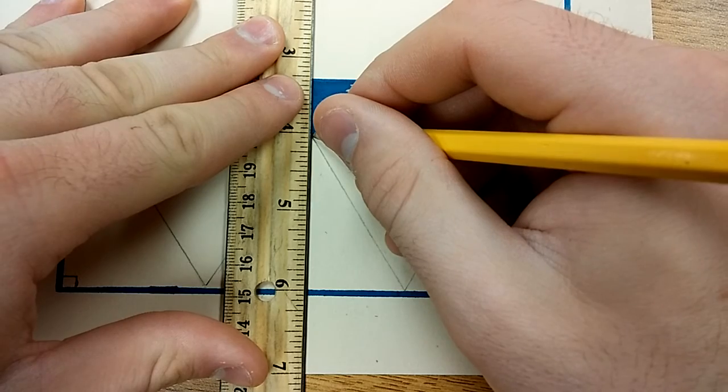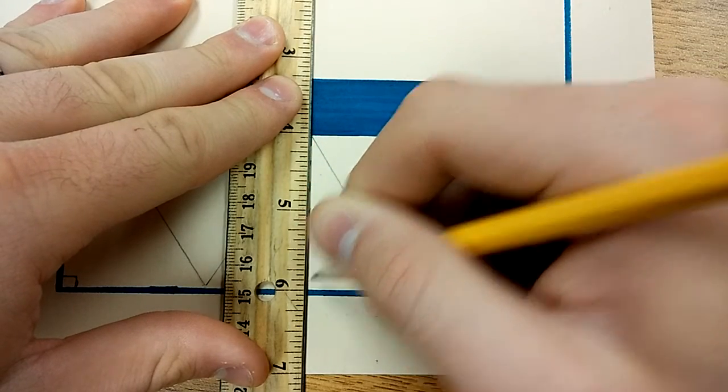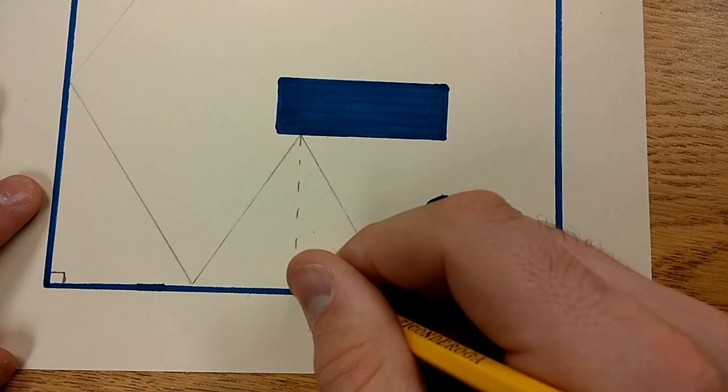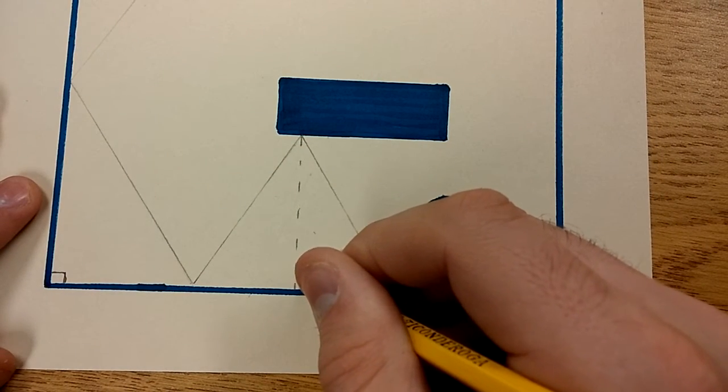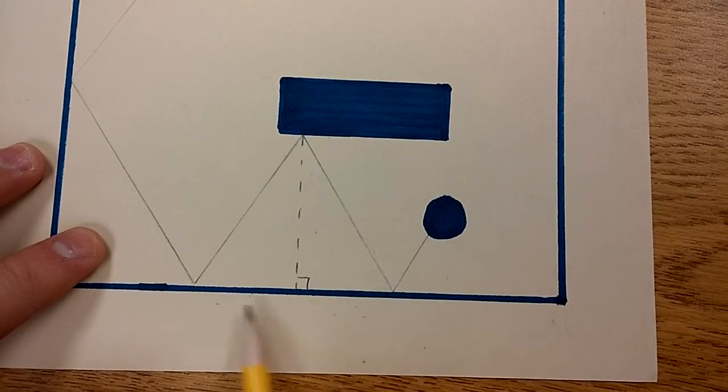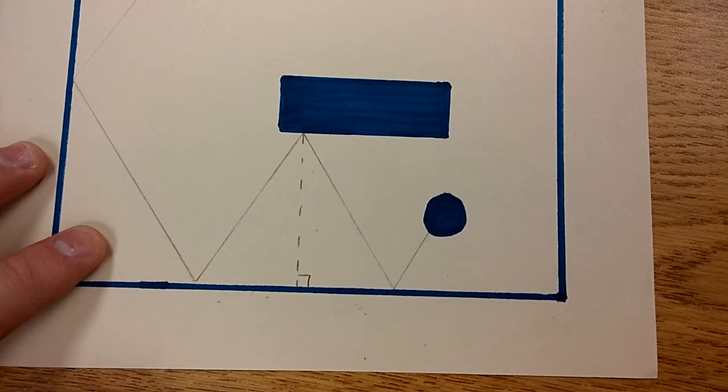You're going to want to do your best to make it parallel. Right angle right here. So now you've created two right triangles. Measure the legs and the leg here, find the hypotenuse.